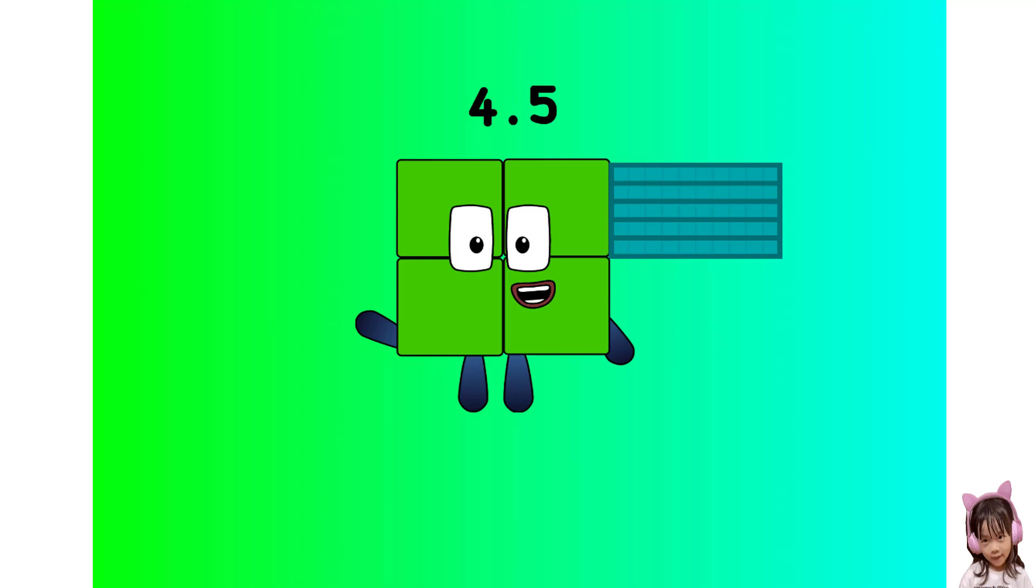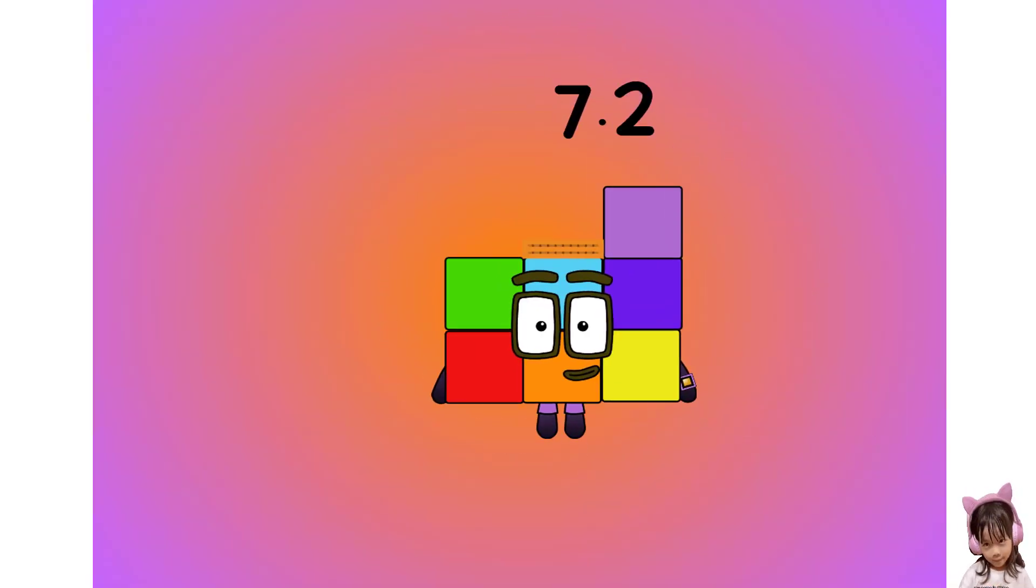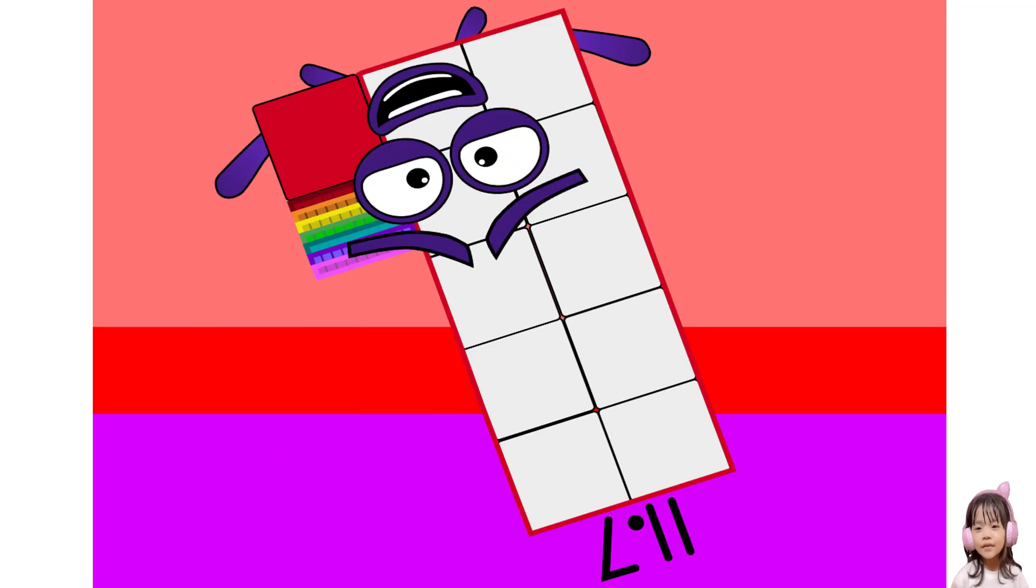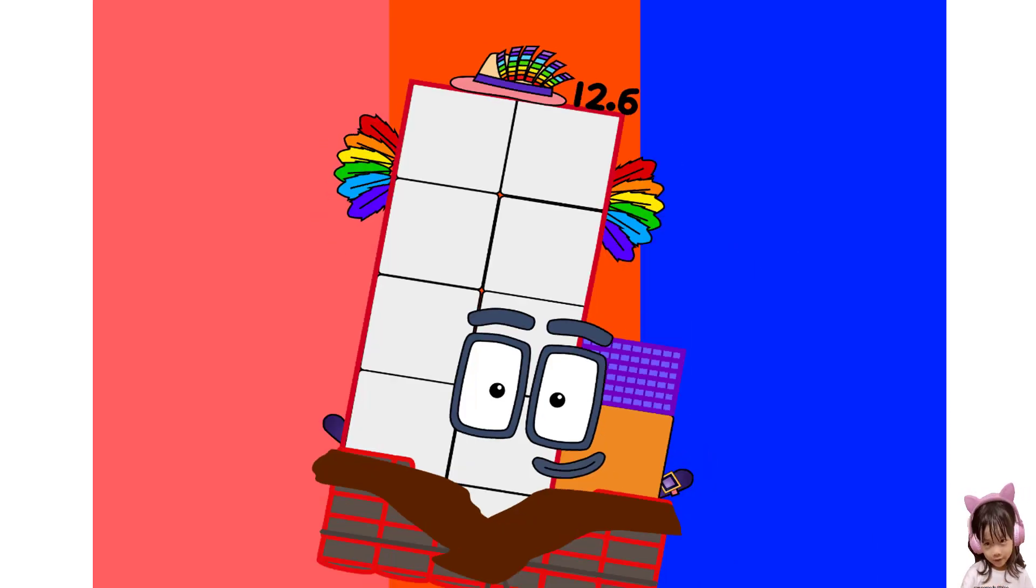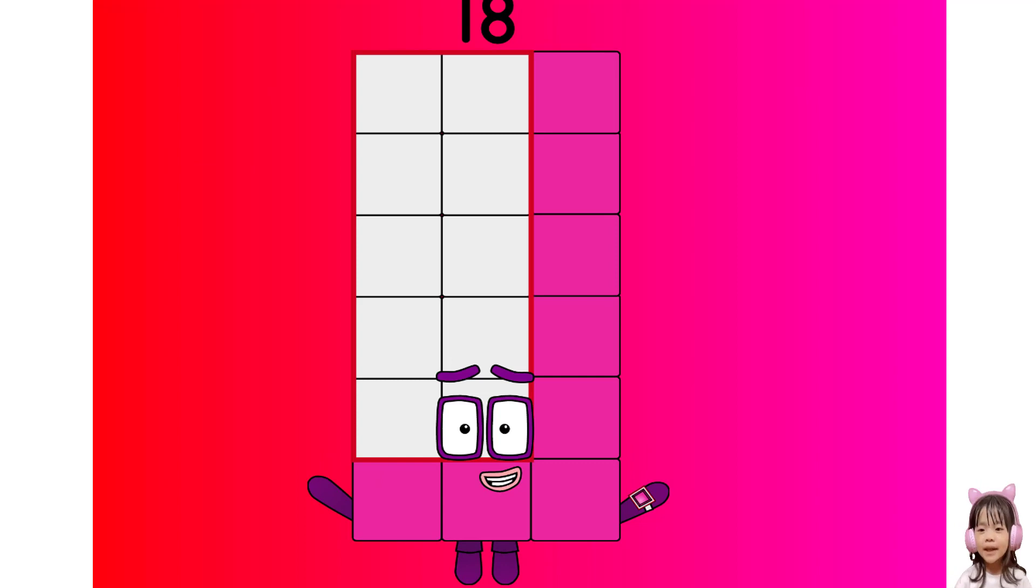0.9, 2.7, 4.5, 6.3, 0.9 is 7.2, 9, 9.9, 11, 13.5, and 14.4, and then 15.3, 15.3, 17.1, and last, like no one is here.